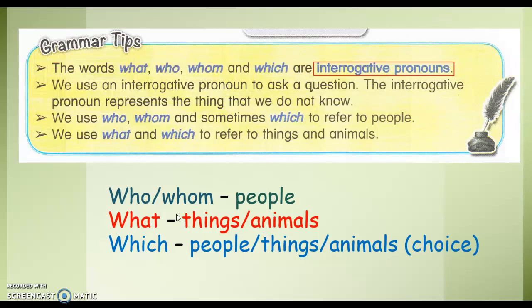And mostly when you are given a choice. 那就是说who，whom，你们是用在人的身上。What就是用来指东西或者是动物。Which就是人、东西、动物都可以用，那通常呢，我们是有选择的时候用which.